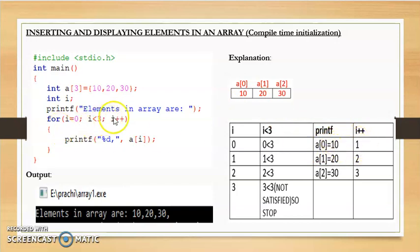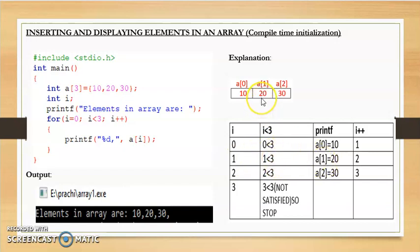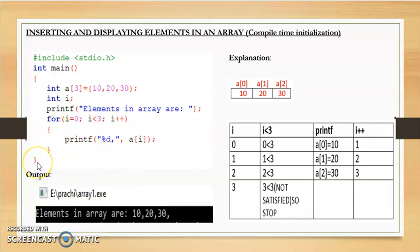Then i is incremented. i becomes 1, it checks is 1 less than 3 — yes — so it prints a[1], which is 20. Then i increments to 2, checks is 2 less than 3 — yes — so it prints a[2], which is 30. Then i increments to 3, checks is 3 less than 3 — condition not satisfied — so the loop terminates and the program terminates.